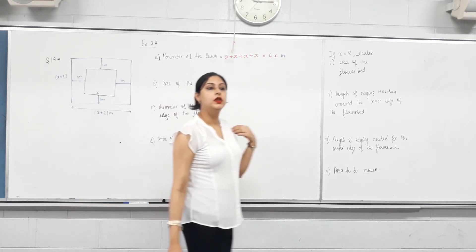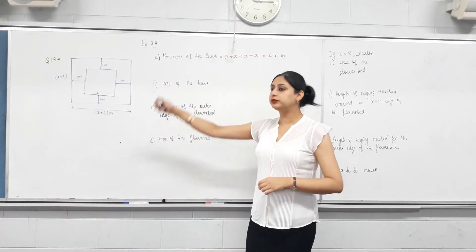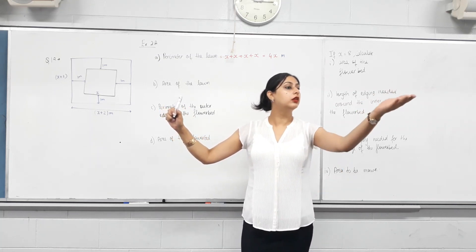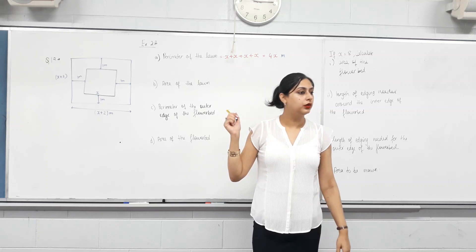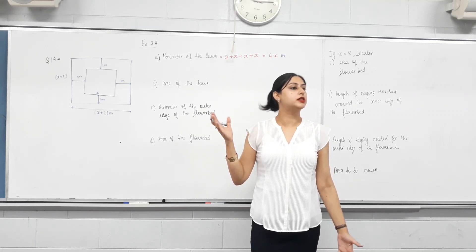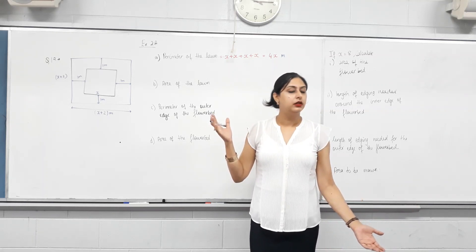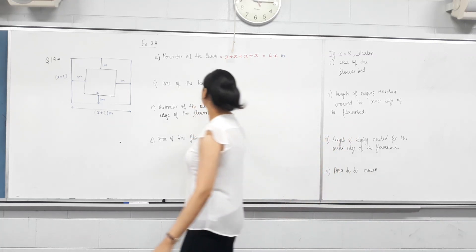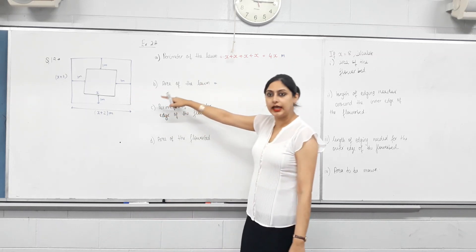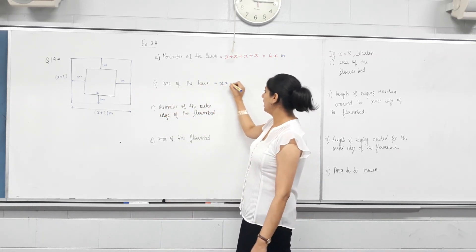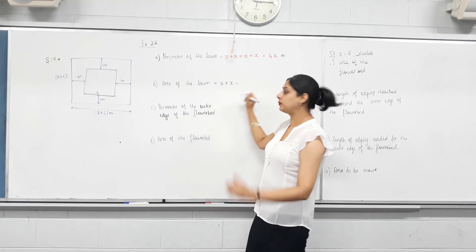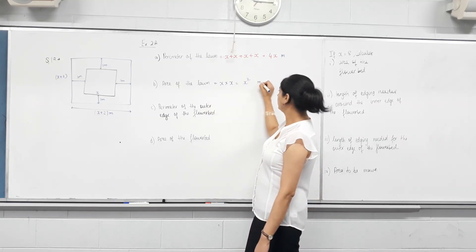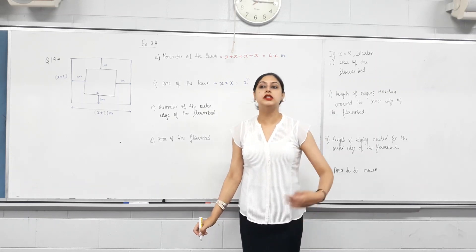Next: area of the lawn. What shape is the lawn? Square. Do we know the formula for area of a square? What's the area of a square equal to? Length times length. So what's the length of the square? X. What's the width? X. It's X times X, so it becomes X squared. Units? Not metres — it's area, so it's metres squared.